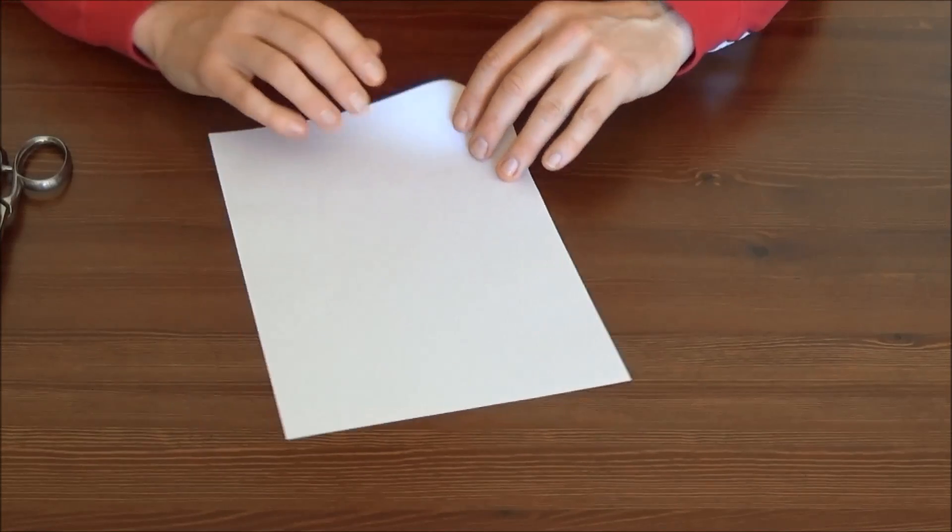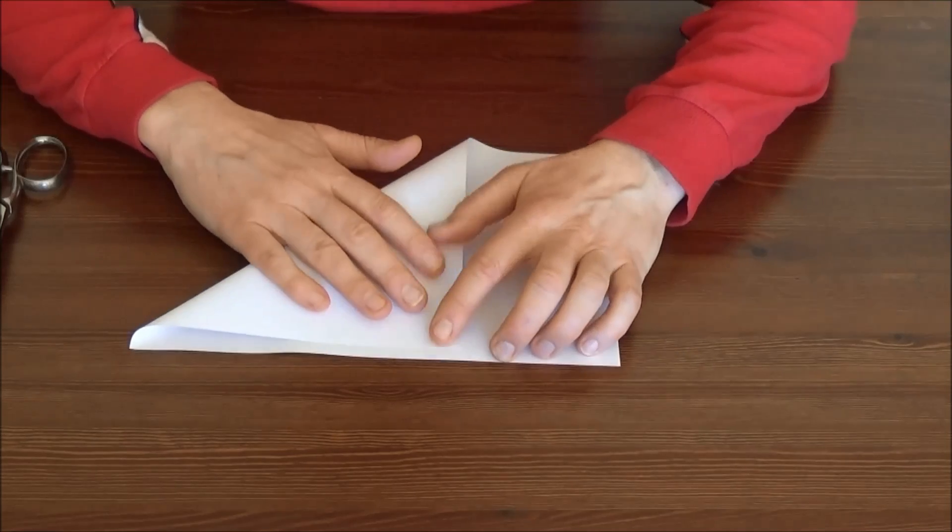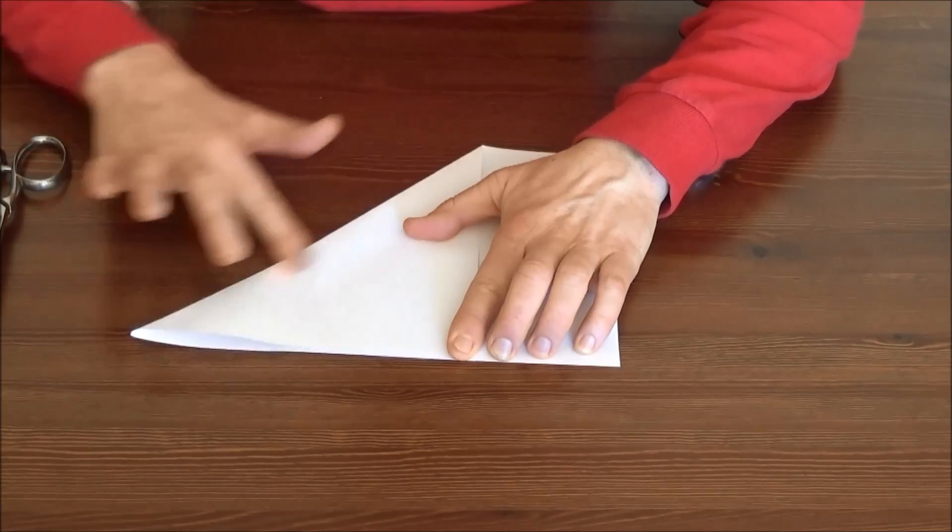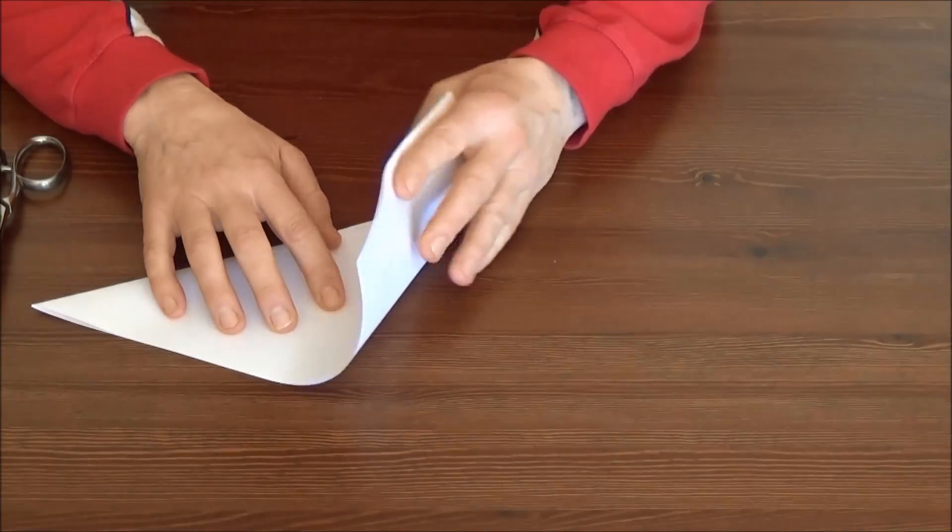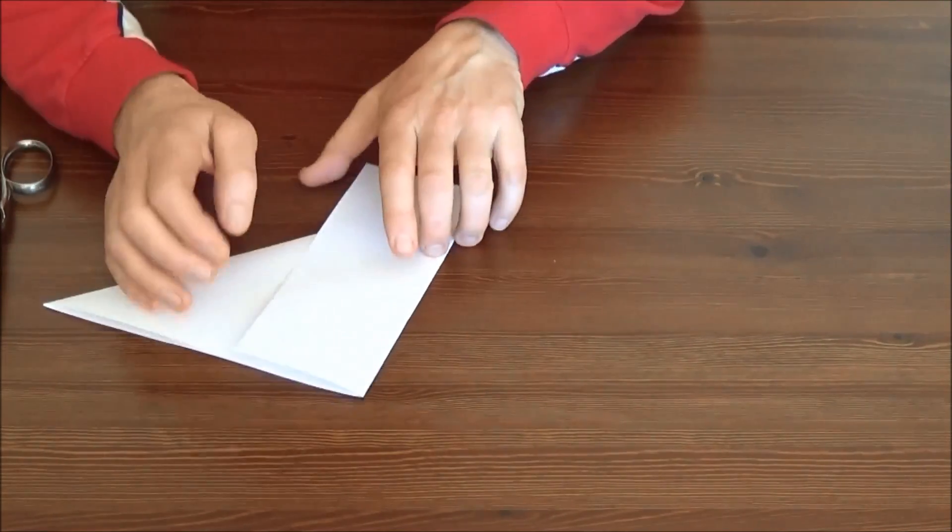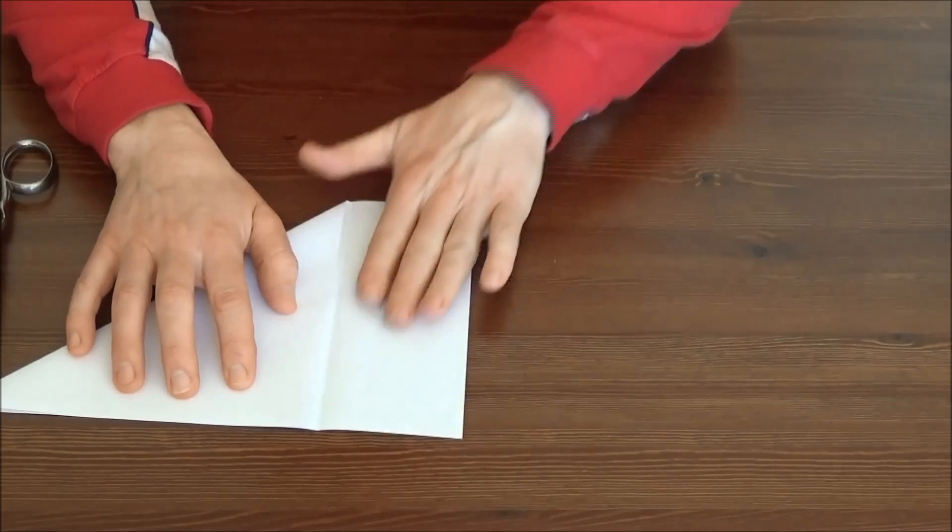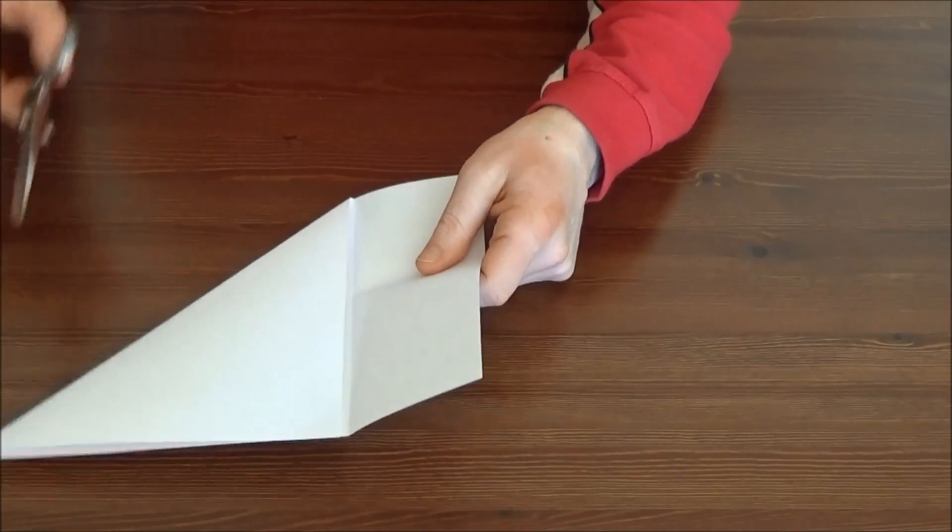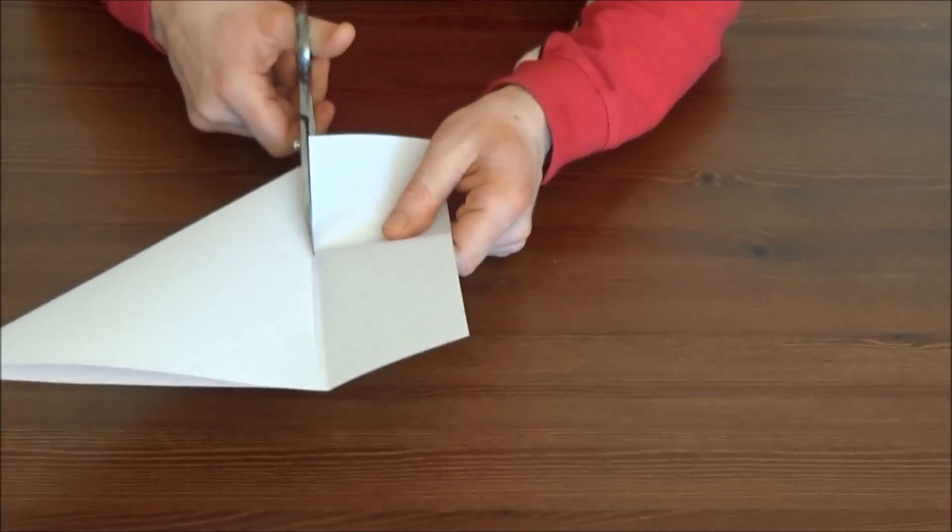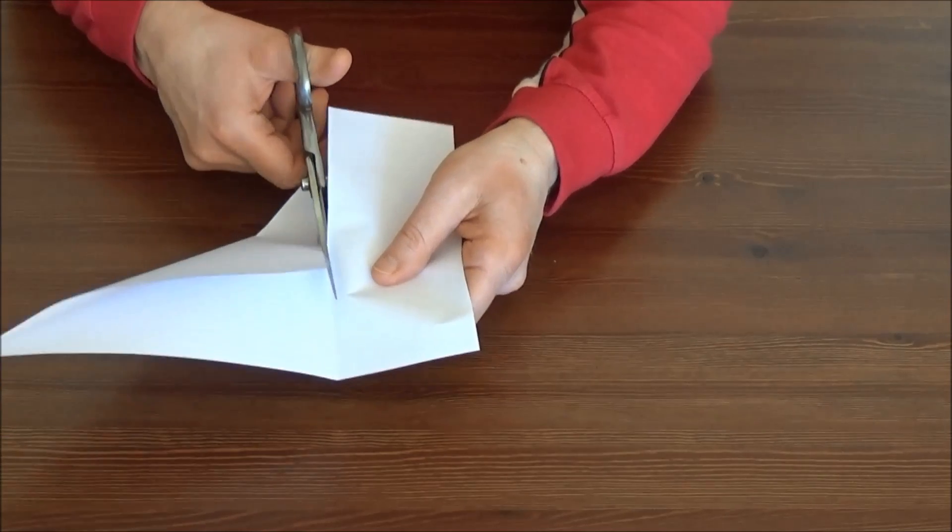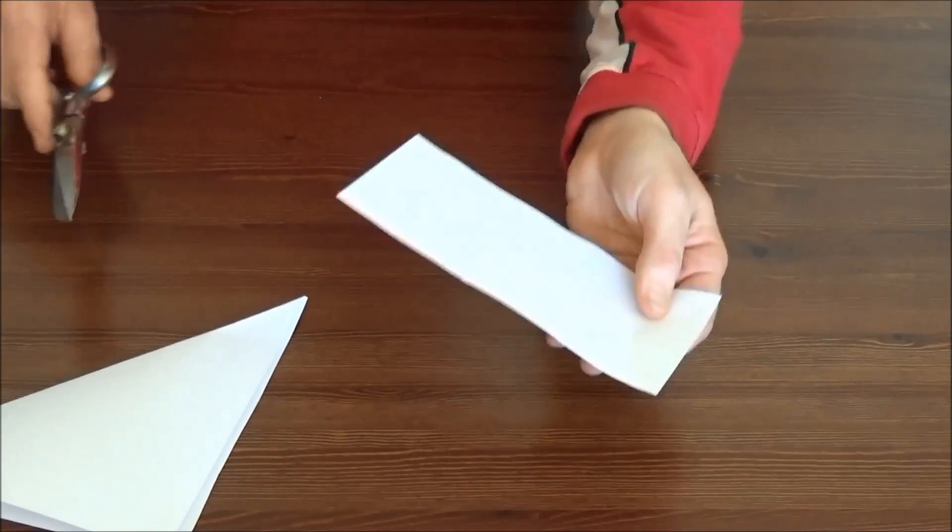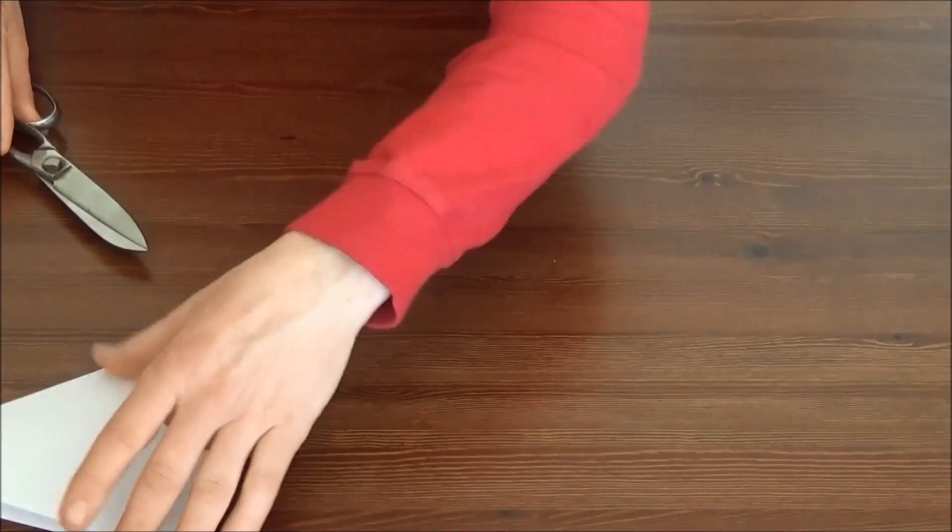And scissors. First, you need to fold a piece of A4 white paper like so. You have a rectangle here, and along this crease you cut. Then get rid of the extra rectangle.